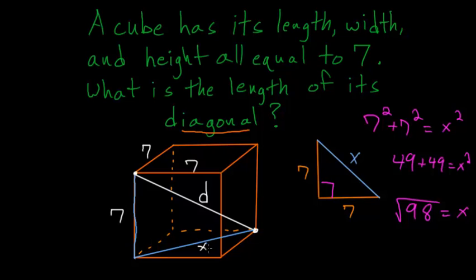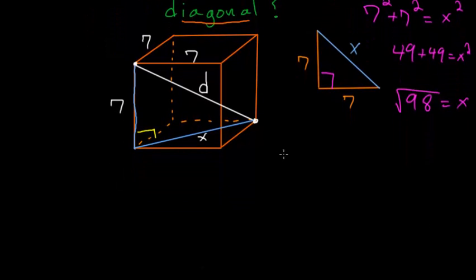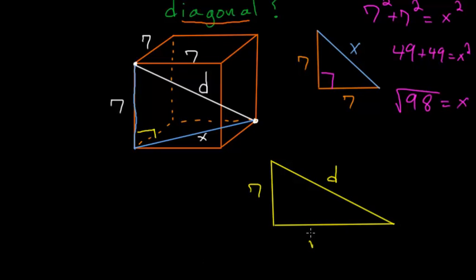And now that we know this bottom length here, we can redraw this right triangle. So we have this length here which is 7, this bottom length here which is X or the square root of 98, and this length here, this hypotenuse, which is D. So this is 7 and this is root of 98.